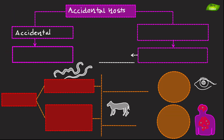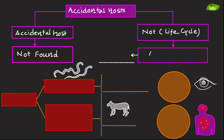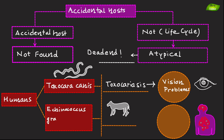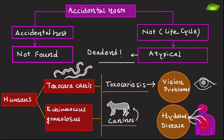Accidental hosts are those in which a parasite is not normally found. These hosts are not typically involved in the parasite's life cycle, and often experience atypical or dead-end infection. For example, humans can become accidental hosts for Toxocara canis, leading to Toxocariasis, a condition that can cause serious health issues such as vision problems. A second example is humans for Echinococcus granulosus — while this parasite typically infects canines, humans can become accidental hosts, resulting in hydatid disease.